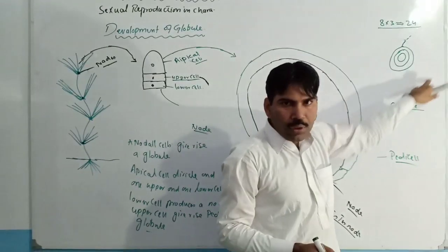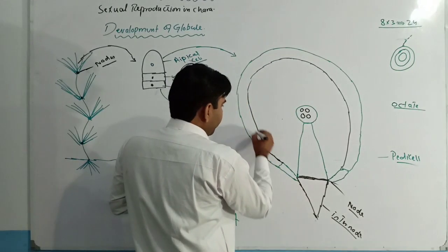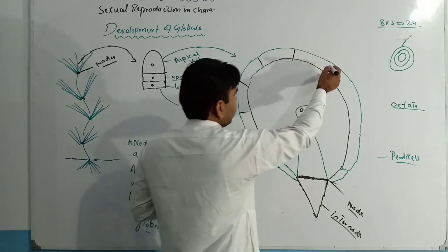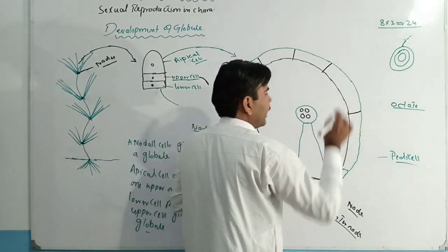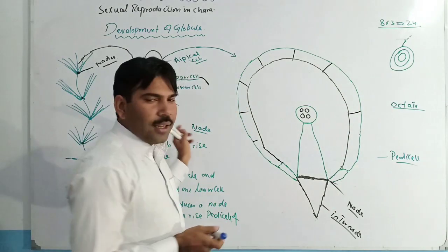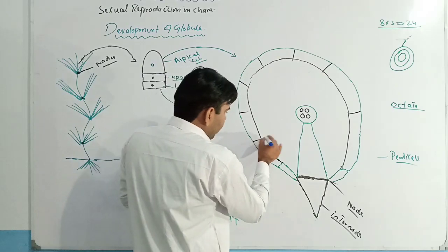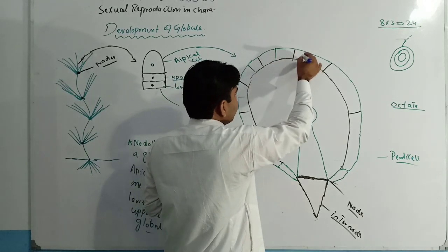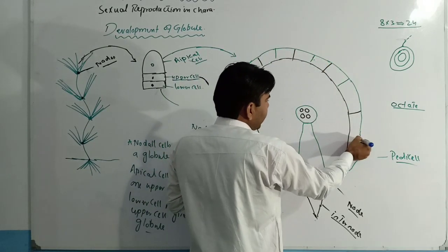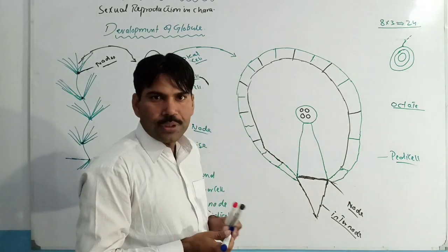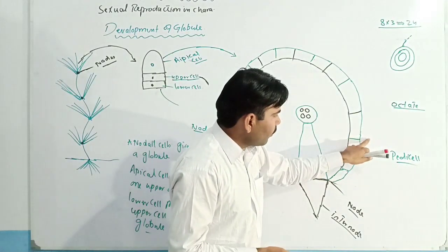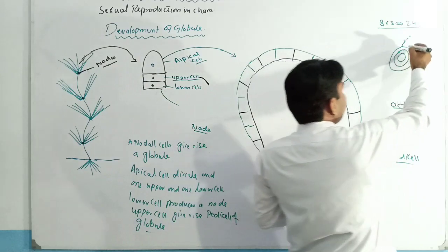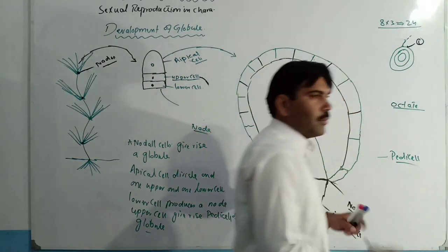These outer 8 cells form the shield of the globule, numbered 1 through 8. In the last lecture we also studied that some radial ingrowths grow inward and make this structure multicellular. These are ingrowths growing inward, and that was the function of the outer layer of 8 cells.